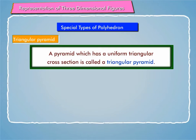Triangular pyramid: A pyramid which has a uniform triangular cross section is called a triangular pyramid. In the figure on screen, triangular pyramid has four vertices A, B, C and D. Four faces ABC, ABD, ACD, BCD. And six edges AB, AD, AC, BC, BD and CD.